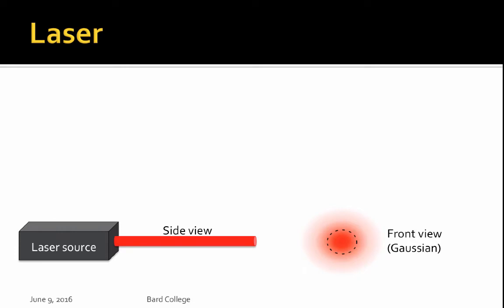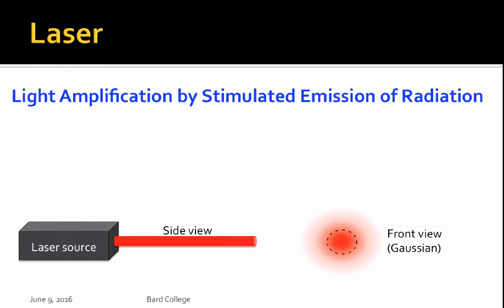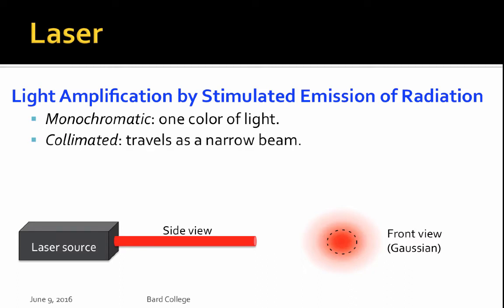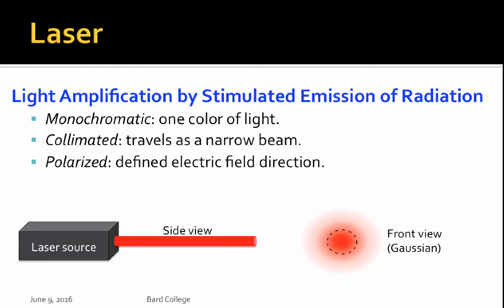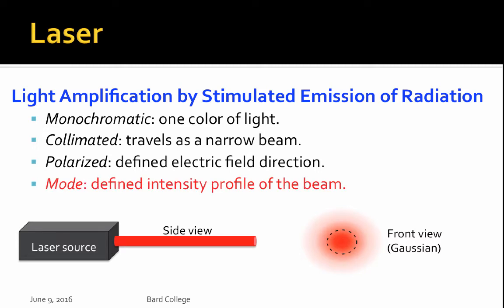Let's start with a quick introduction to the laser. Most of you know that laser stands for light amplification by stimulated emission of radiation. The important features of laser light are that it's monochromatic, or one color — you should know the wavelength of the laser you're working with, which is always written on the laser and can also be measured. The laser beam is collimated, which means it travels more or less as a narrow beam, although it does diverge, which is exactly what you're measuring in this lab. Our laser is polarized, which means it has a defined electric field direction. And in red here is the mode, because the Gaussian beam refers to the mode of the laser, meaning it has a defined intensity profile.